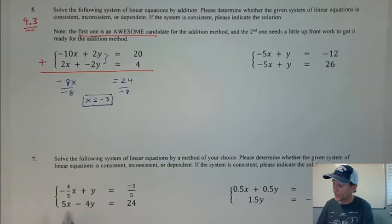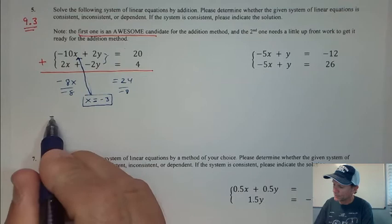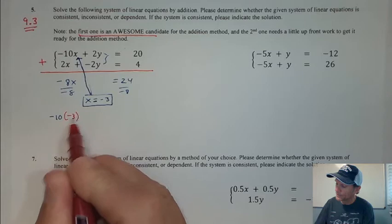Then don't want to stop there because remember we got to get an x and y value here. I'm going to go back into line 1 and put in my x value so I have -10 times -3. That's the x value that I just found.